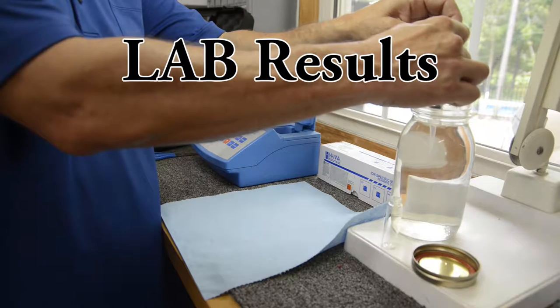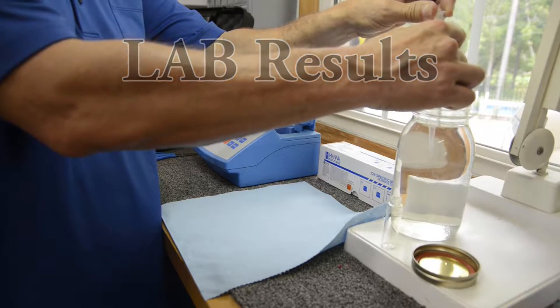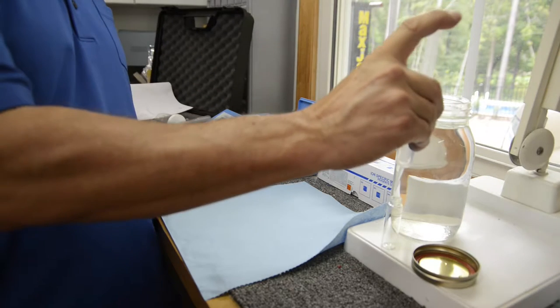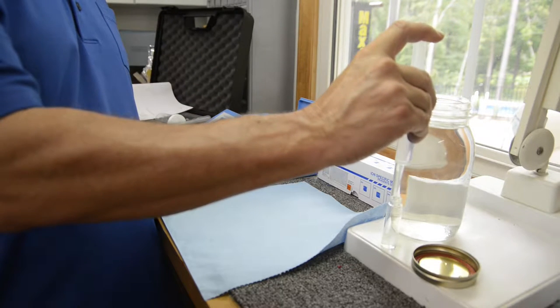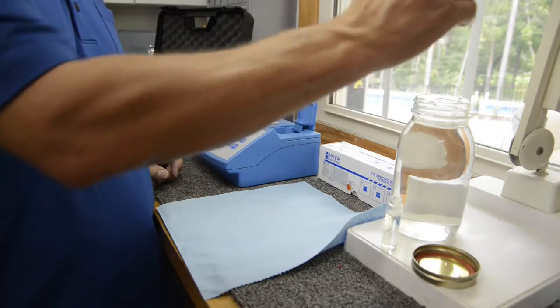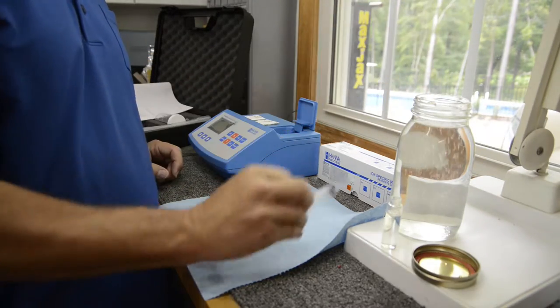So here we are in the lab, and this is a control - this is water that has not been bubbled from our greenhouse. This is going to give us a baseline. We need to know where the starting level of nitrate was before we bubbled it.